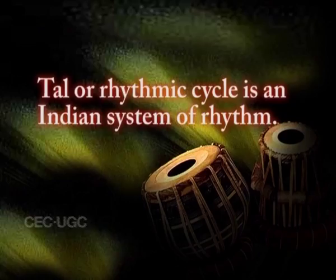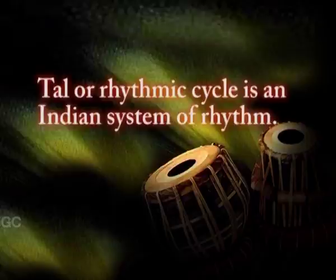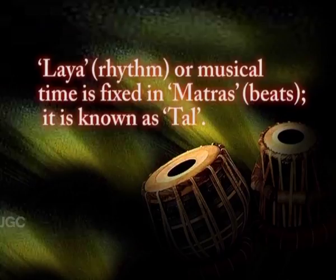In this lecture, I will briefly explain Thal. Thal or rhythmic cycle is an Indian system of rhythm. Laik or rhythm is the basic tempo which is set by the performer for singing or playing any musical composition. When Laik or musical time is fixed in matras, that is beats, it is known as Thal. We can say Thal is a cycle of a fixed number of matras or beats, repeated over and over again till the composition is completed.